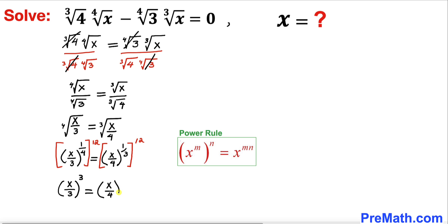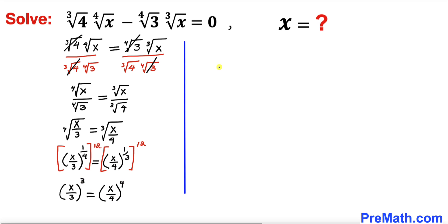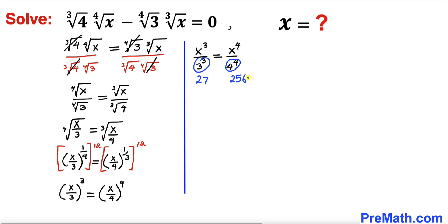So the left hand side becomes (x/3)^3, which equals x³ divided by 3³, and the right hand side becomes (x/4)^4, which equals x⁴ divided by 4⁴. We note that 3³ equals 27 and 4⁴ equals 256.